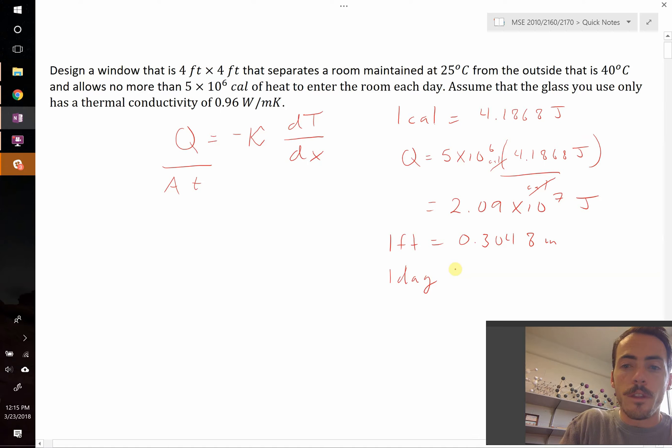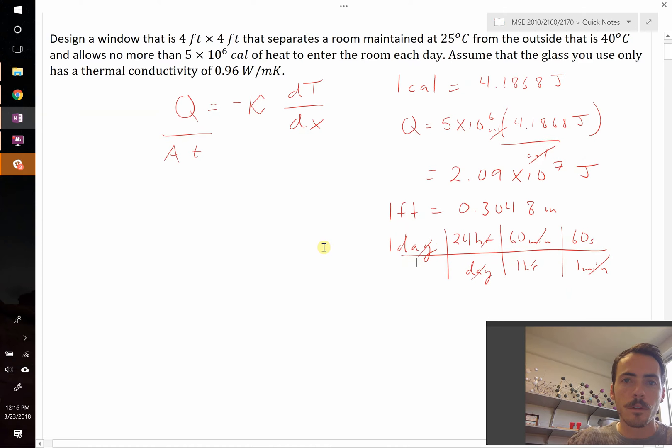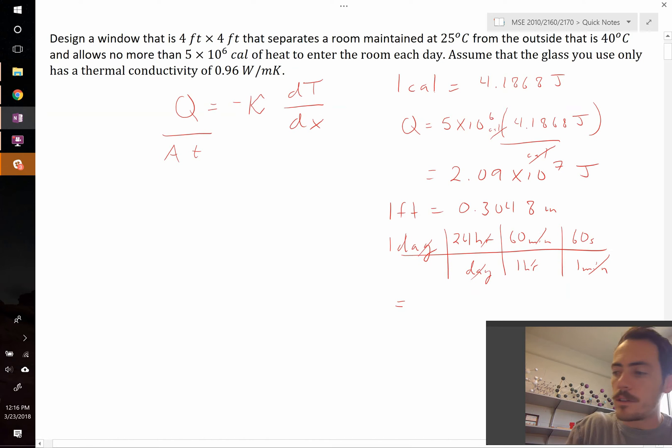We know that there's going to be 24 hours in a day. There's one hour in 60 minutes, there are 60 seconds in one minute. And so this allows us to cancel out everything except for seconds. In one day I find that there is 86,400 seconds.